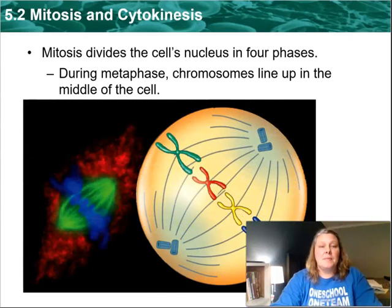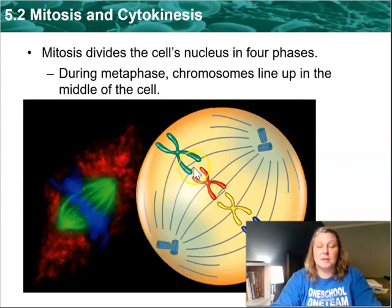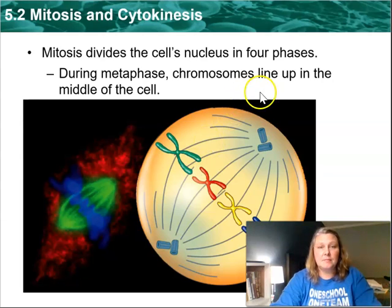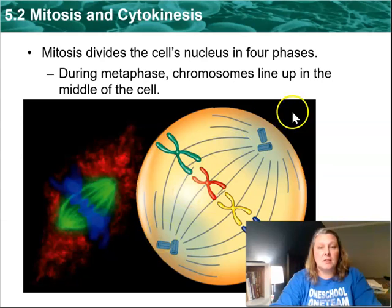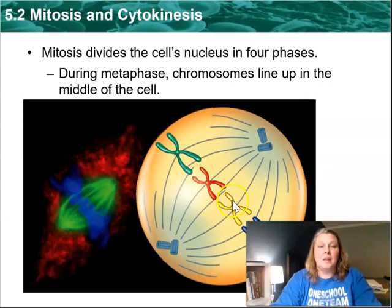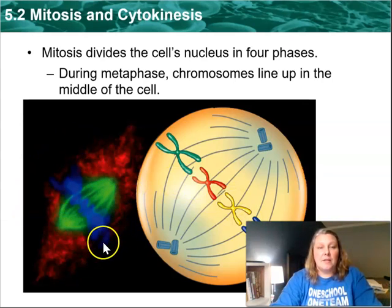The second step is metaphase. Meta means middle, and as you see here, the chromosomes are lined up in the middle. They're all nice and neat and organized because we want identical daughter cells. The centrioles have moved to the opposite poles — you can think of this as Earth: you have a north pole, a south pole, and the chromosomes are lined up on the equator. You can see this in the actual picture of a cell going through mitosis.